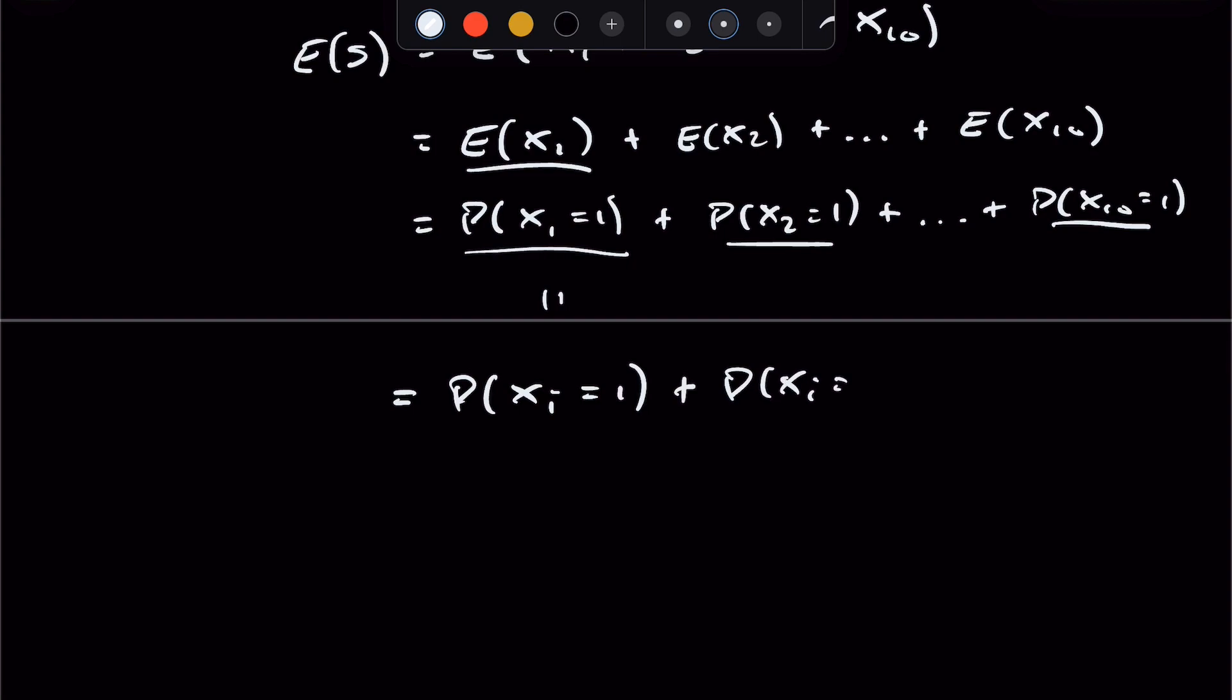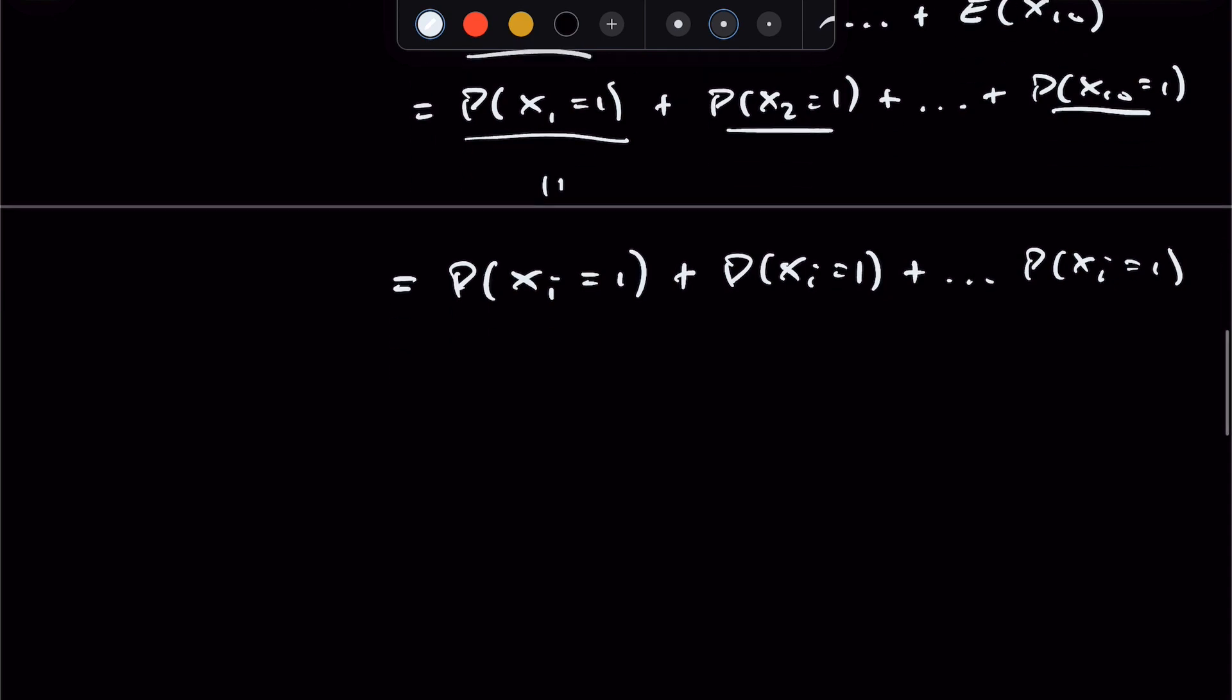So the probability that x1 is equal to 1 is equal to the probability that xi is equal to 1, and so on. In this case, i is just a random floor. It could be 3, 4, 5, any of the 10 floors. So we can aggregate this summation. It's 10 times the probability that xi equals 1.